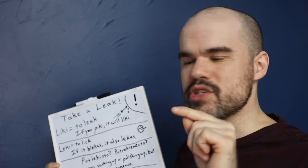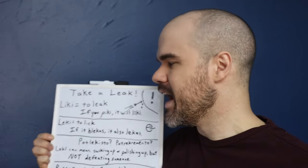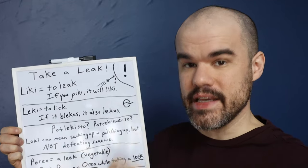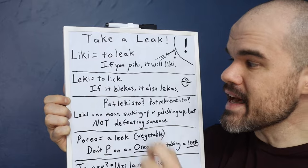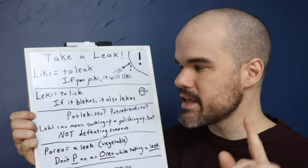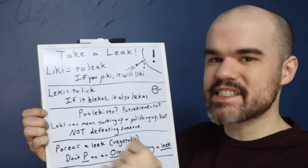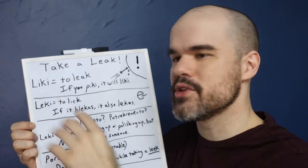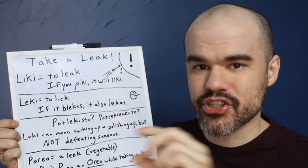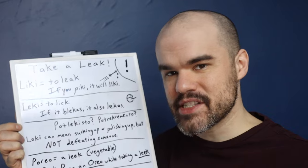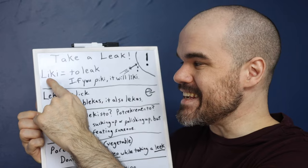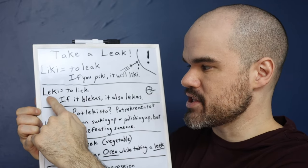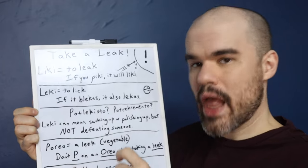Piki is like to stab, to sting, to puncture. A pikilo would be like a stinger on a bee. So if you puncture it, it will leak — if you piki, it will liki. Leki is to lick. Liki, leki — very similar. There is no short I sound, no 'ih' sound in Esperanto. You've got to make all your I's into a long E sound: liki. And your E's into an 'eh' sound: leki. So leki is to lick something.